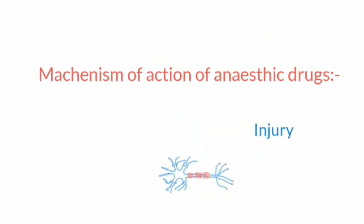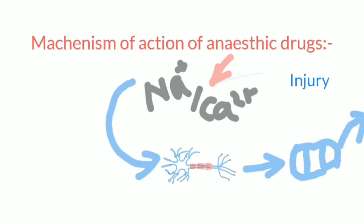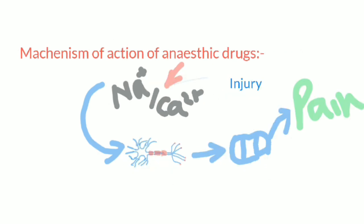Now we will discuss the mechanism of action of anesthetic drugs. Before knowing the mechanism, first we need to know how pain occurs due to any cut or injury. We know that sodium and calcium ions are responsible for transmitting the impulse to the brain. The brain reads this signal and feels pain. When injury occurs, sodium and calcium transmit this impulse through the nerve cell into the brain, then the brain reads the signal and pain occurs.